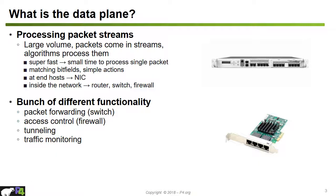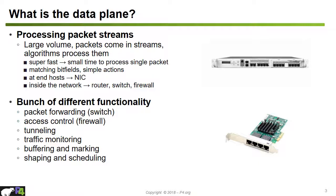Traffic monitoring is another functionality implemented at the data plane, used to count how many packets have been received from a given flow or traffic aggregate. Packets also need to be buffered at the switch and marked according to marking rules to check if they comply with traffic profiles. Multiple users may have different priorities, so clever shaping and scheduling algorithms are needed to regulate access to switch resources.